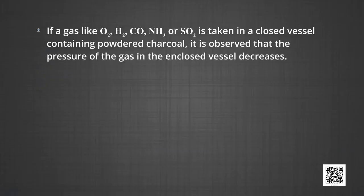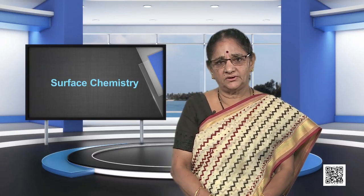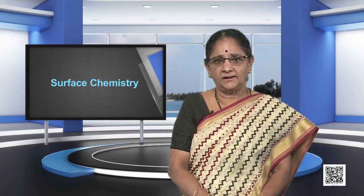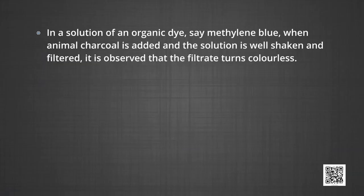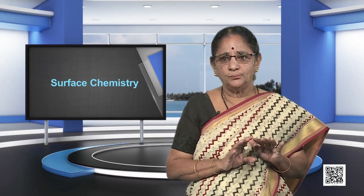If a gas like oxygen, hydrogen, carbon monoxide, chlorine, ammonia, or sulfur dioxide is taken in a closed vessel containing powdered charcoal, the pressure of the gas in the enclosed vessel decreases — the gas molecules concentrate at the surface of the charcoal, i.e., gases are adsorbed at the surface. In a solution of an organic dye such as methylene blue, when animal charcoal is added, shaken, and filtered, the filtrate turns colorless, as the molecules of the dye accumulate at the surface of the charcoal.